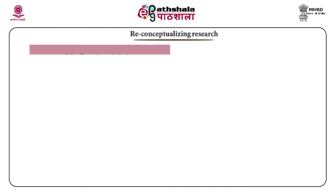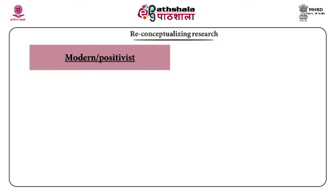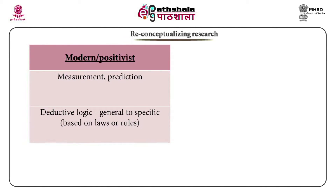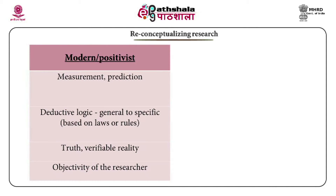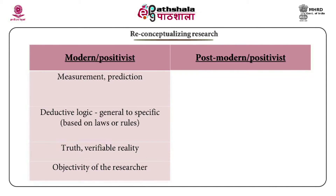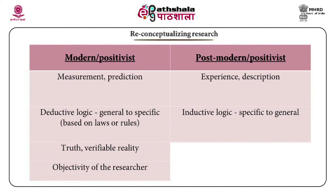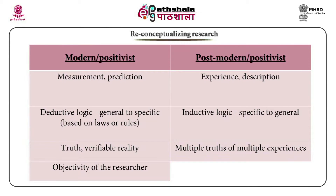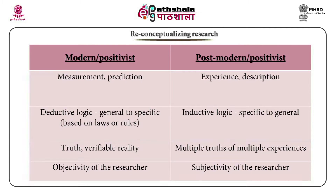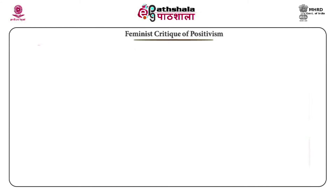Reconceptualizing research: modern positivist thought involves measurement, prediction, deductive logic, truth, verifiable reality and objectivity of the researcher. The postmodern, post-positivist thought involves experience, description, inductive logic, moving from the specific to the general, multiple truths of multiple experiences, and subjectivity of the researcher.